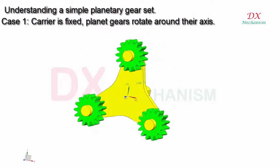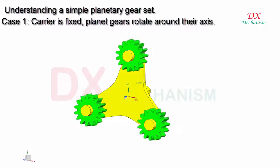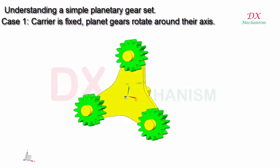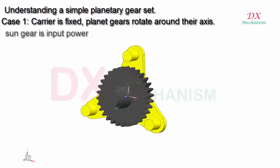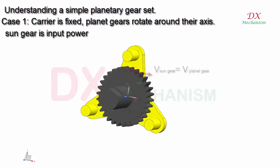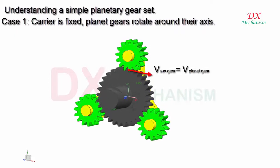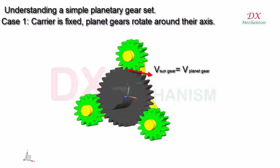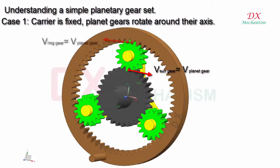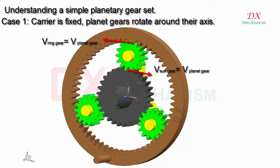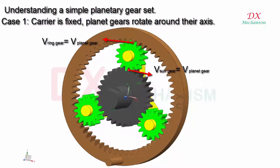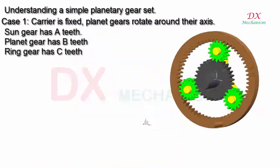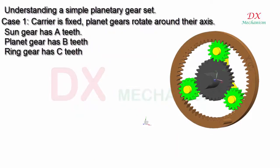Case 1: the carrier is fixed, and the planet gears rotate around their own axis. The sun gear is the input power. Sun gear and planet gear are external gears, so rotation transmission is reversed. Ring gear and planet gear are internal gears, so rotation transmission is the same. How to calculate ratio transmission: